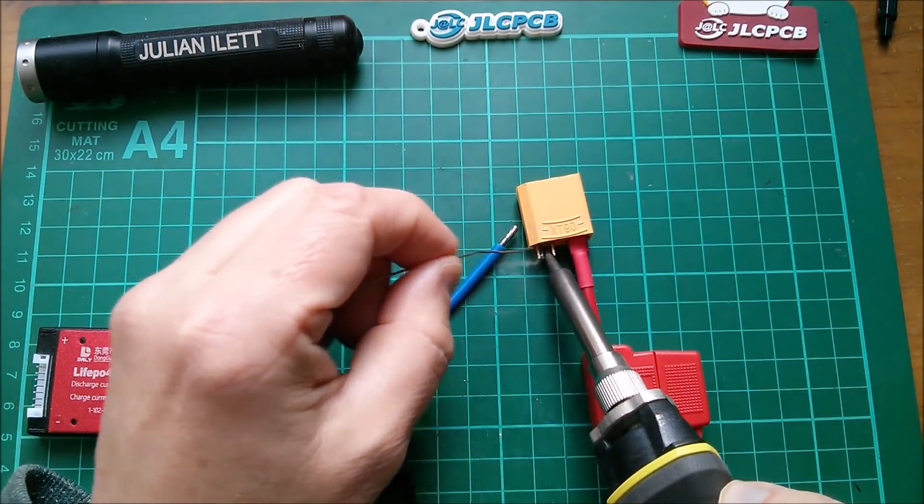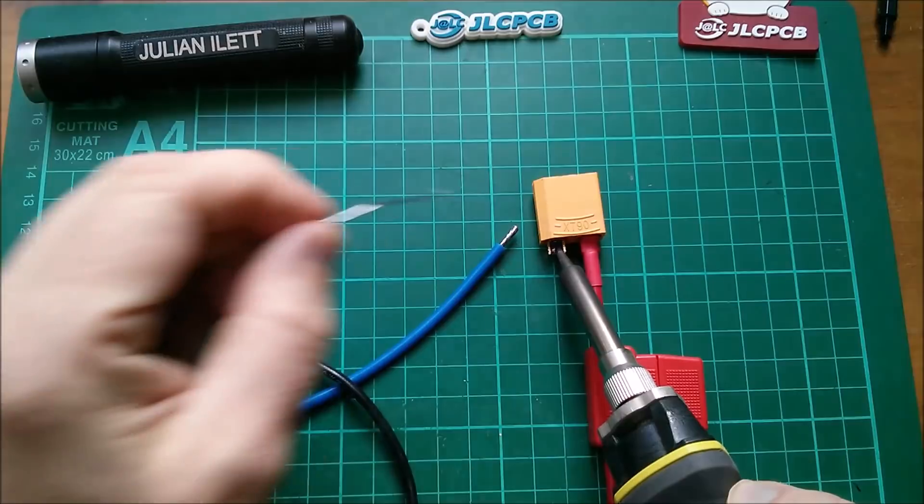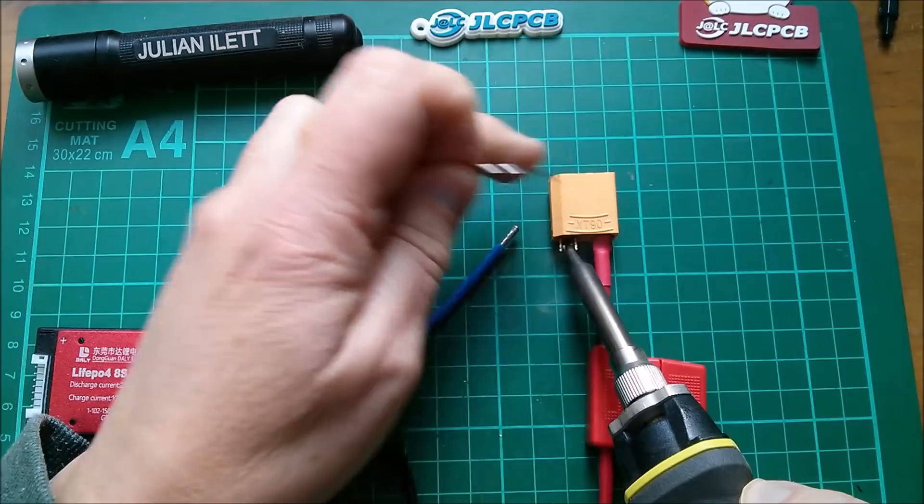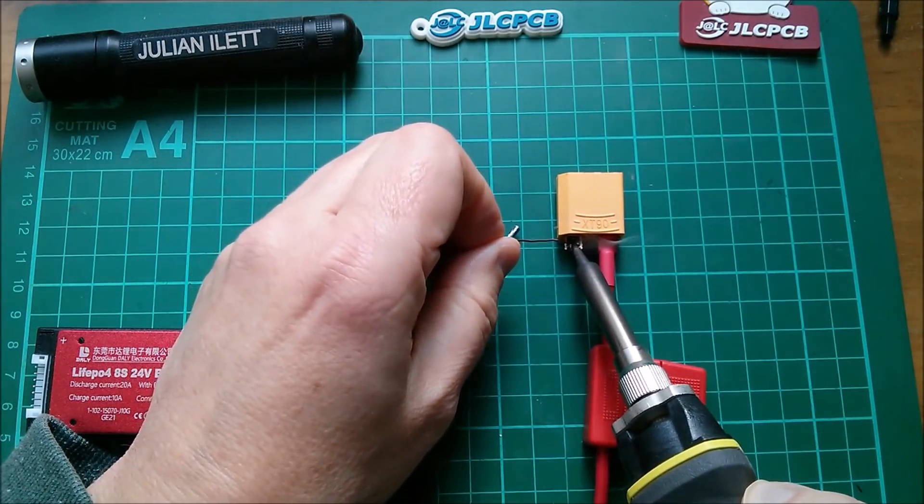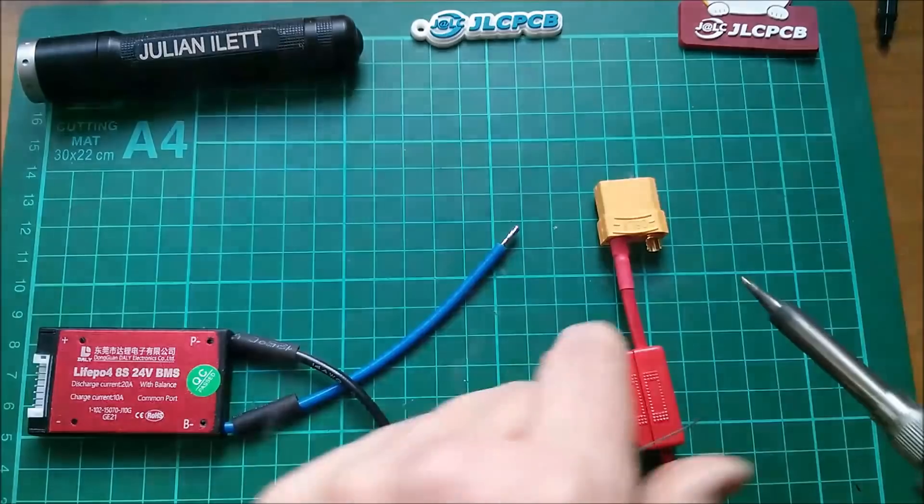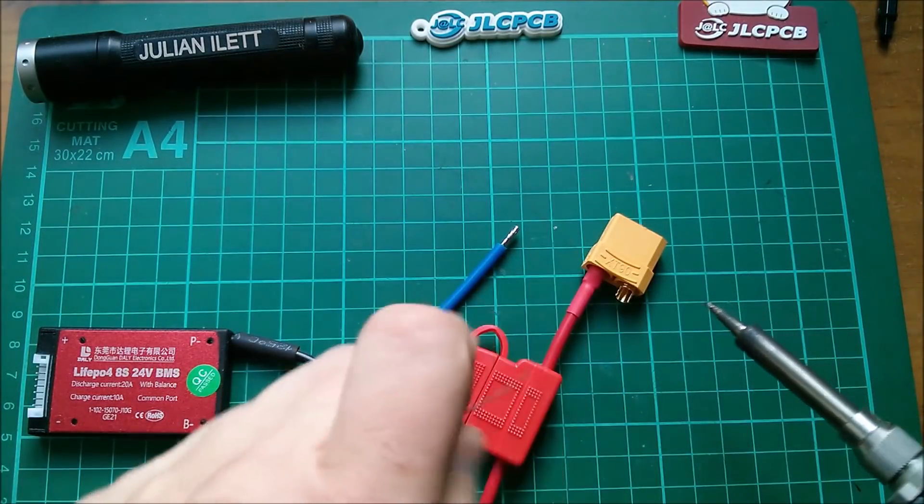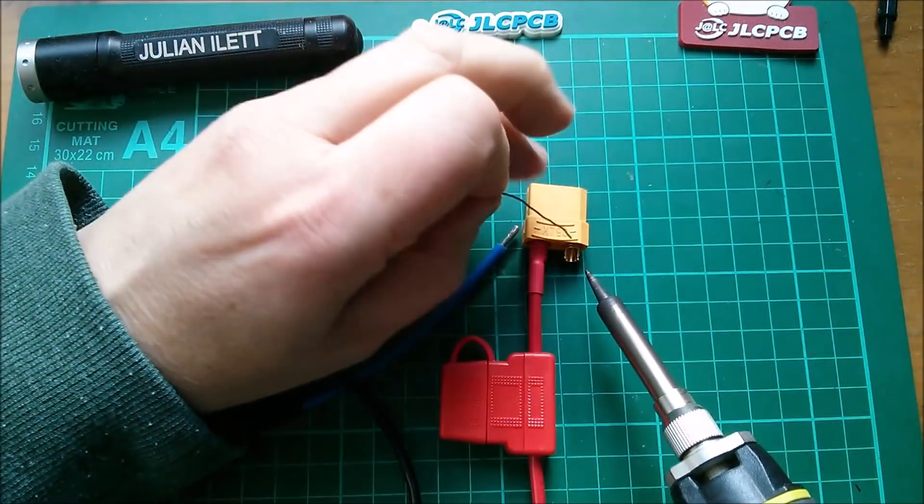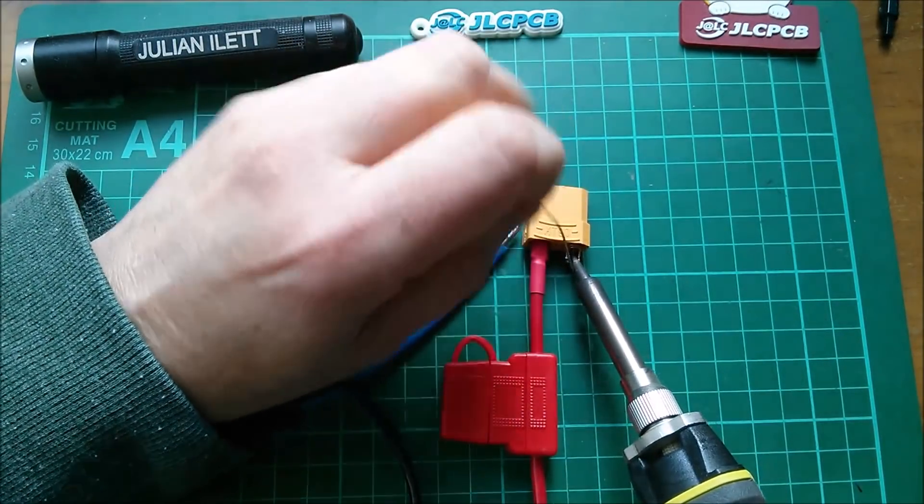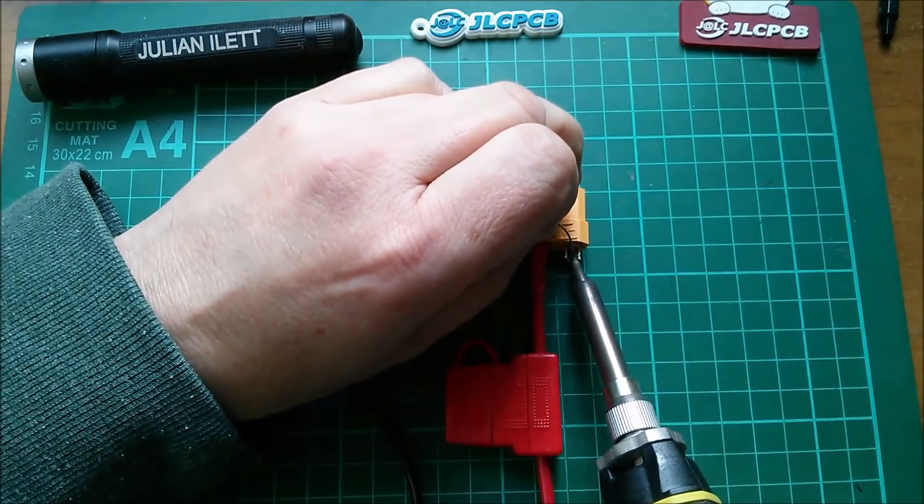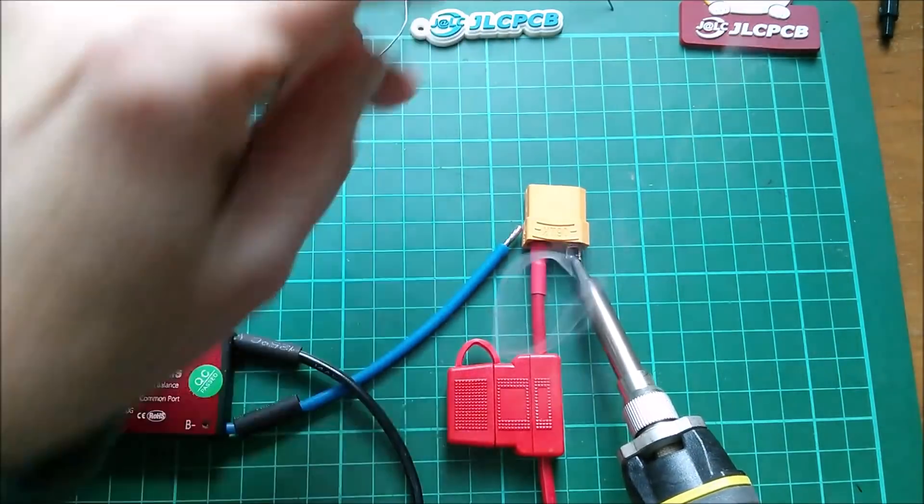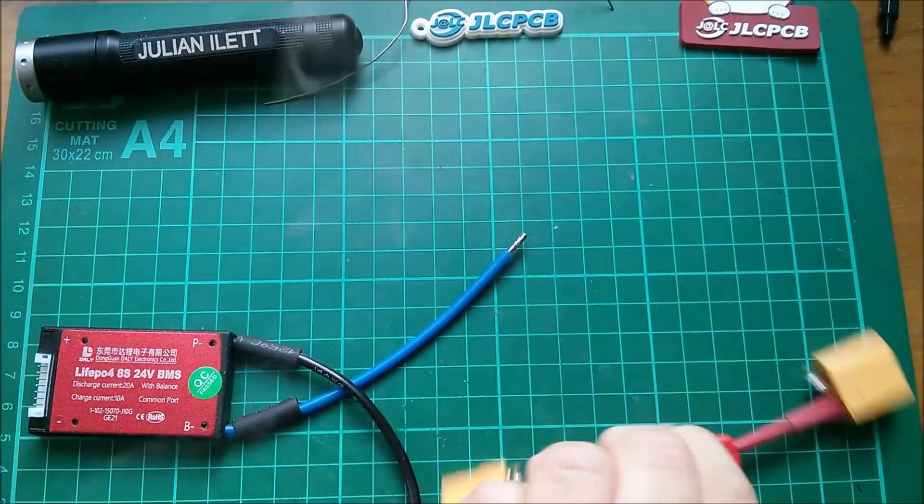Now I want the battery negative blue to be in this connector, and then pack negative black to be in this connector which you normally see on the end of a battery pack. That will give me a BMS protected battery pack. I need lots of solder in there.